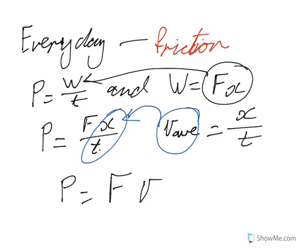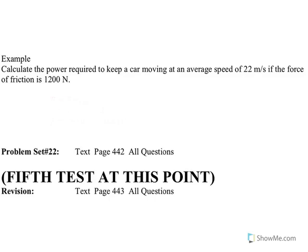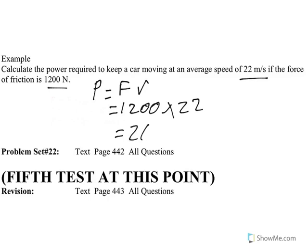Okay. So when something's moving with a certain velocity or speed, and we know the force of friction that's overcoming, we can work out the power that's got to be produced by the motor. And this example just shows exactly that. The power required to keep a car moving at an average speed of 22 meters per second if friction is 1200. So the power, F×V, 1200 times 22. And you do that, you get 26,400, which we would put as 26.4 kilowatts.